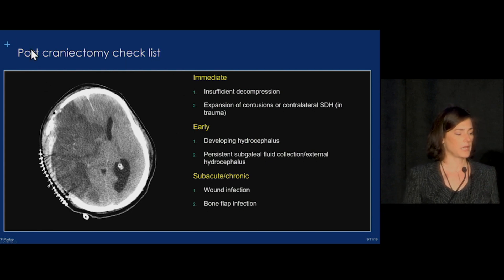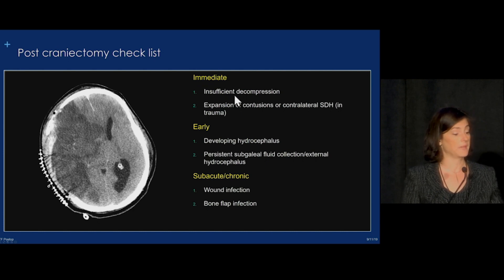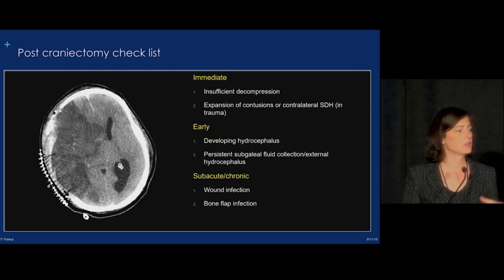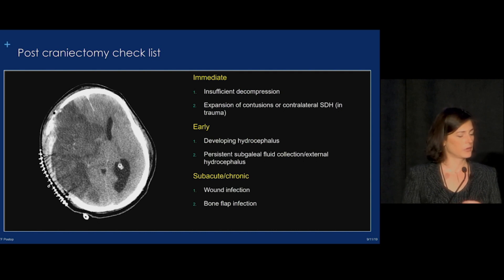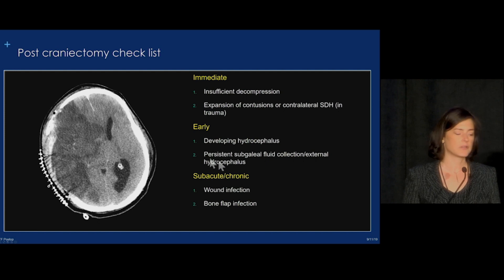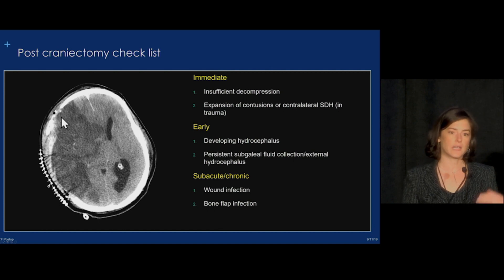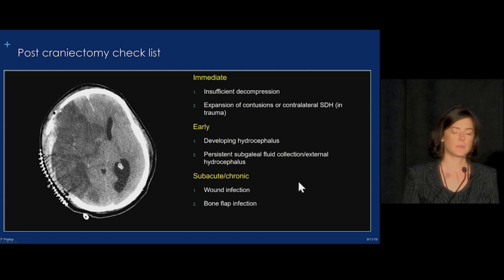When looking at patients after a craniectomy, on their first postoperative study we want to ask: is there adequate decompression? Is the bone flap big enough? In the setting of trauma, once you release that pressure, you can see blossoming contusions or contralateral subdural hematomas develop, so examine for those. We're always thinking about developing hydrocephalus, which can sometimes be external hydrocephalus — a collection developing under the craniectomy flap. Late, we're going to think about infection.